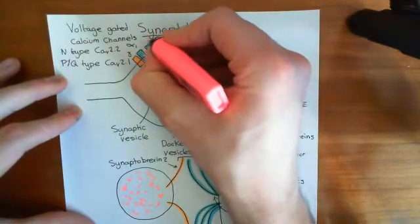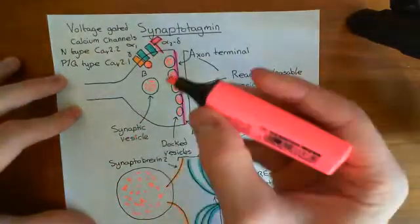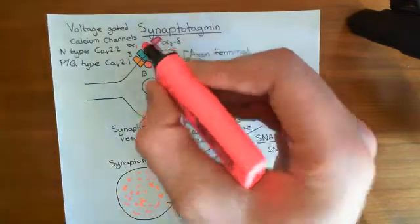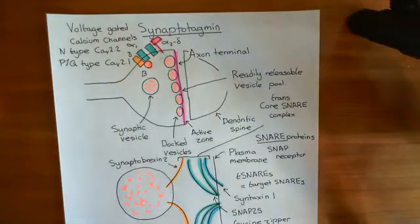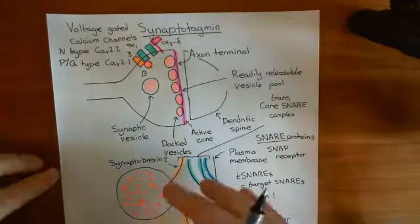The reason the alpha-2 delta subunit is called alpha-2 delta is because it's made up of both the alpha-2 subunit and the delta subunit. The box represents the alpha-2 subunit. This stick at the bottom, which is implanted into the membrane, is the delta subunit, and they're linked by disulfide bonds. When an action potential occurs across this membrane, you're going to get depolarization of the electrical potential difference across the membrane. That's going to activate these N-type and PQ-type voltage-gated calcium channels, and they're then going to open.